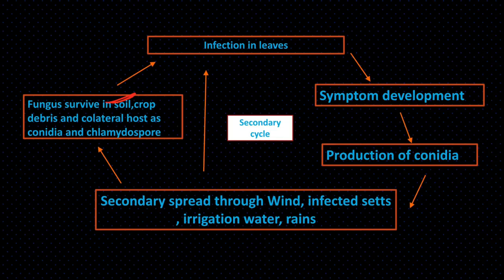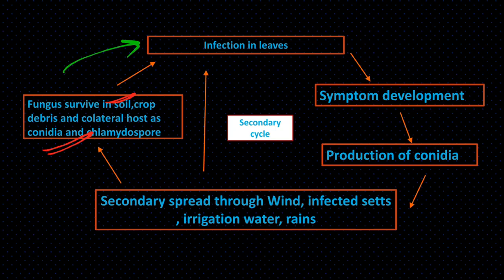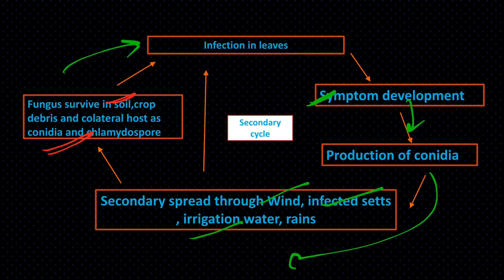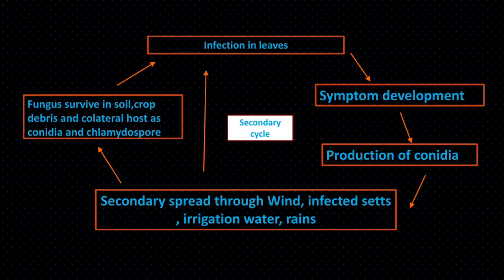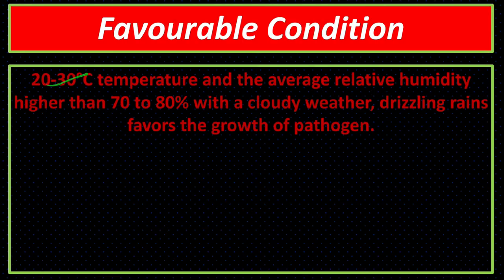Disease cycle: pathogen survives in soil, crop debris, or collateral hosts as conidia or chlamydospores. It first infects sugarcane leaves, then grows and develops in leaves, then transfers to the stem, causing three types of symptoms. It then produces conidia that spread via wind, infected sets, irrigation water, or rain to other plants — secondary infection cycle. After crop maturity, the pathogen survives in collateral hosts or soil. Favorable conditions: 20 to 30°C temperature, 70 to 80% relative humidity, cloudy days, and intermittent rain.